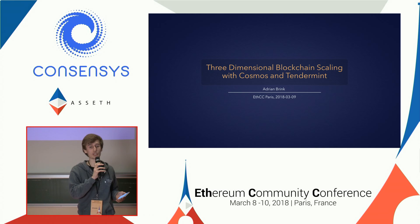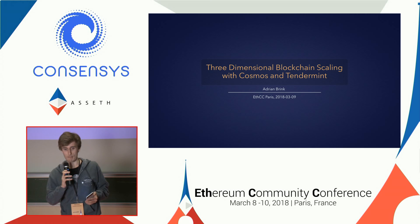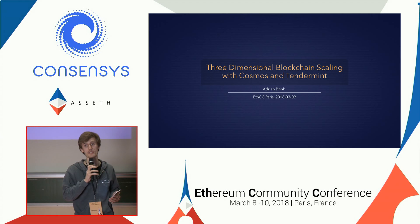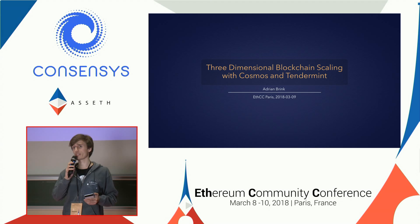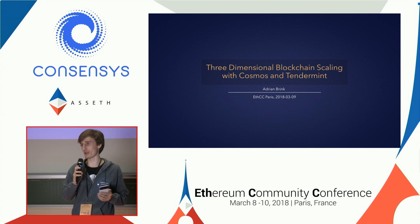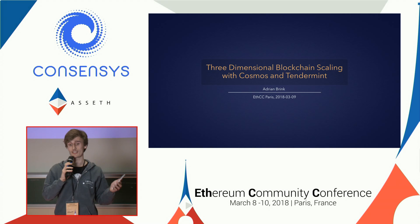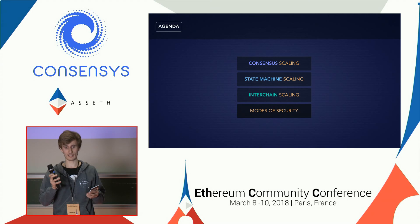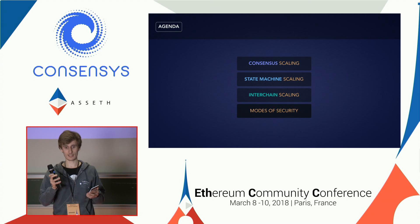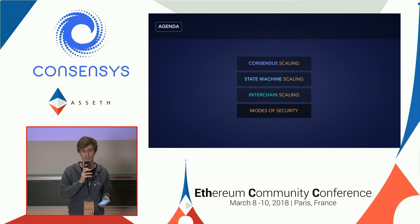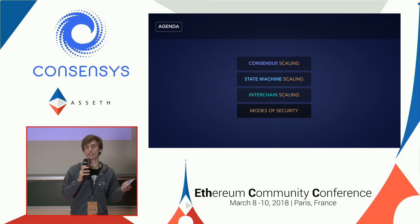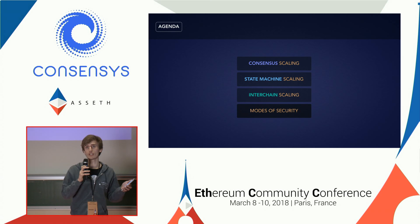Today I'm going to talk about three-dimensional blockchain scaling with Cosmos and Tendermint. It touches on some parts discussed earlier but also introduces slightly different concepts on possible solutions to scalability within blockchains. I'm Adrian and I'm also working on the Cosmos project. The three dimensions are consensus scaling, state machine scaling, and interchain scaling. Just as a brief recap: when you look at Ethereum or Bitcoin, a blockchain is not a monolithic stack — you have peer-to-peer networking at the base layer, a consensus layer on top, and a state machine layer on top of that.